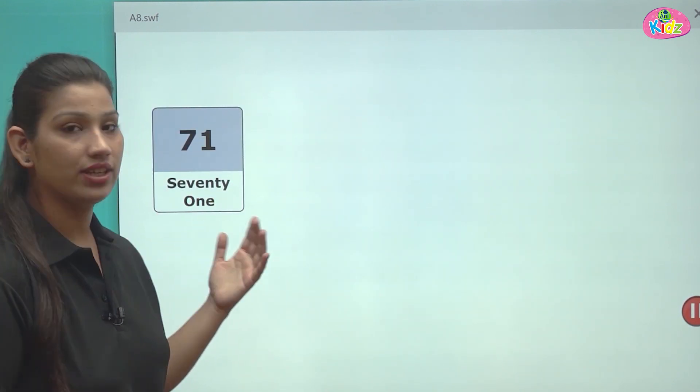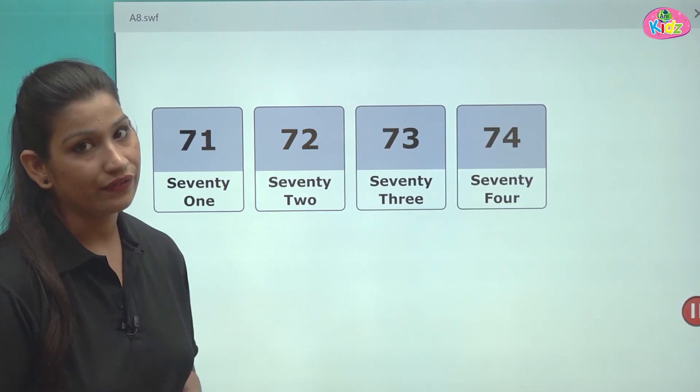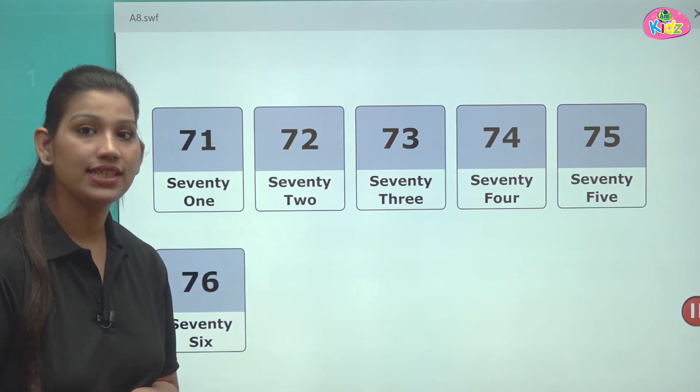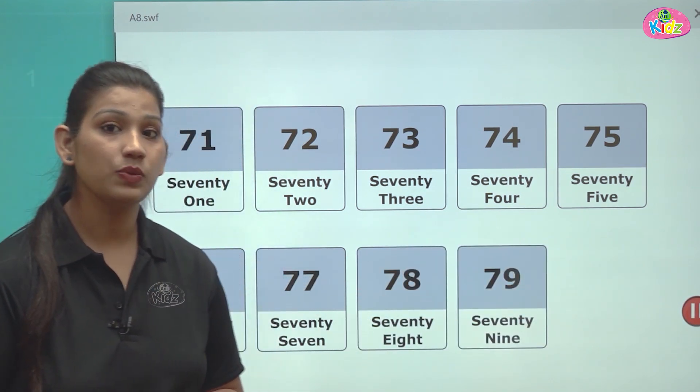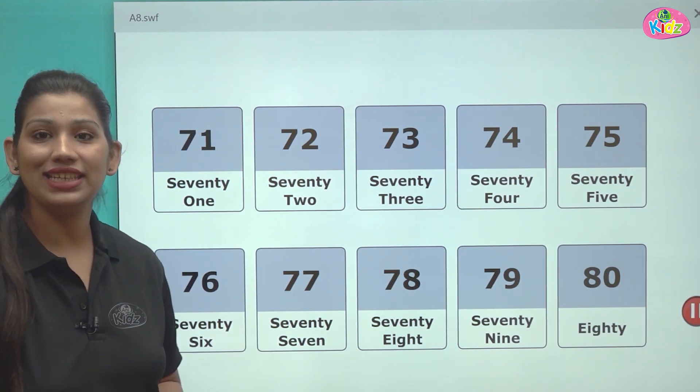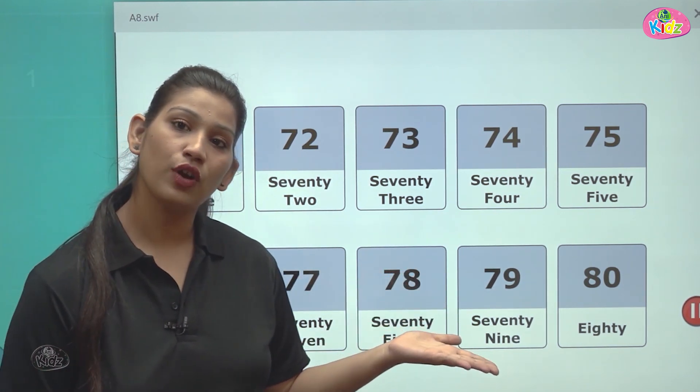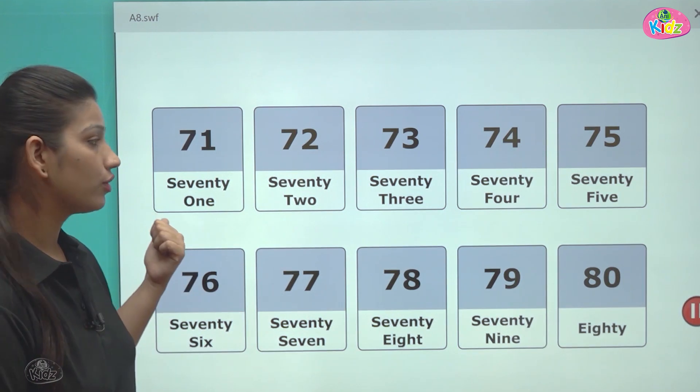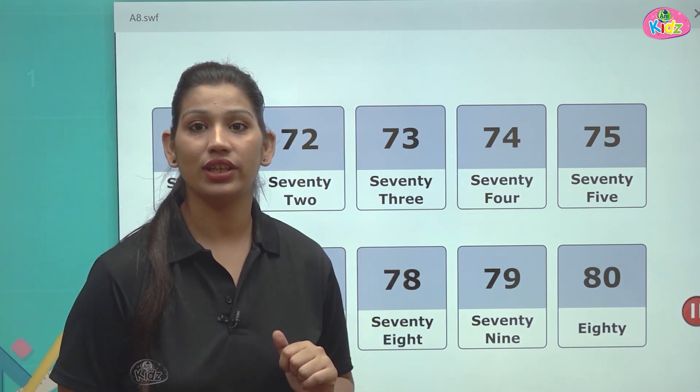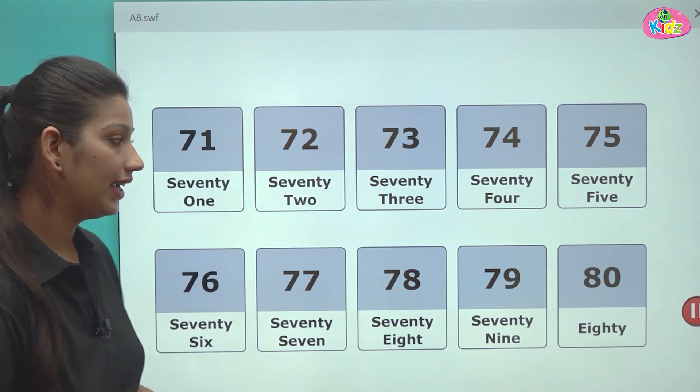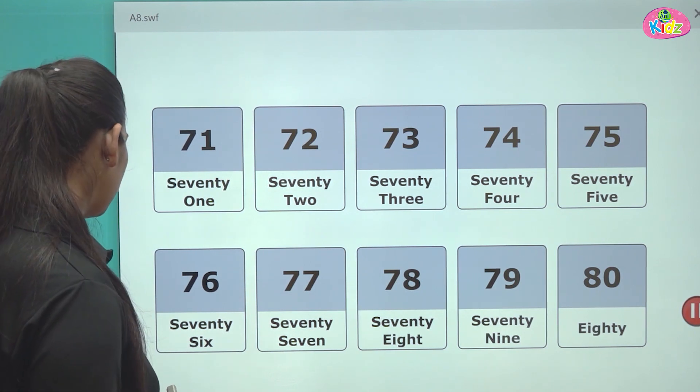After 70, there starts 71, 72, 73, 74, 75, 76, 77, 78, 79 and the last number which is number 80. 71 to 79, same pattern follow hoga. Now 70, pehle 70 ki spelling, and it's 1, 2, 3, 4, 5, this is how easy it is. And 79, after 80, there comes 80. E-I-G-H-T-Y, 80.